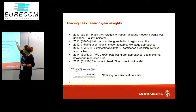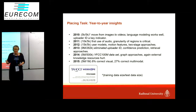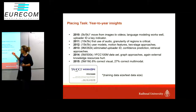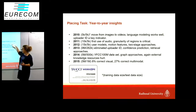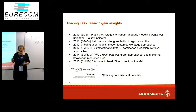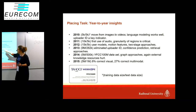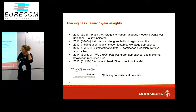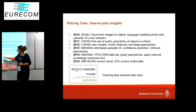In the first year we expanded from images to video and found that language modeling works well, and also that the ID of the user uploading to Flickr was a key indicator. Then we moved on to using audio, granularity of regions, motion features, and user models with two-stage approaches. In 2013 we eliminated the uploader ID signal and worked on confidence prediction and retrieval approaches.